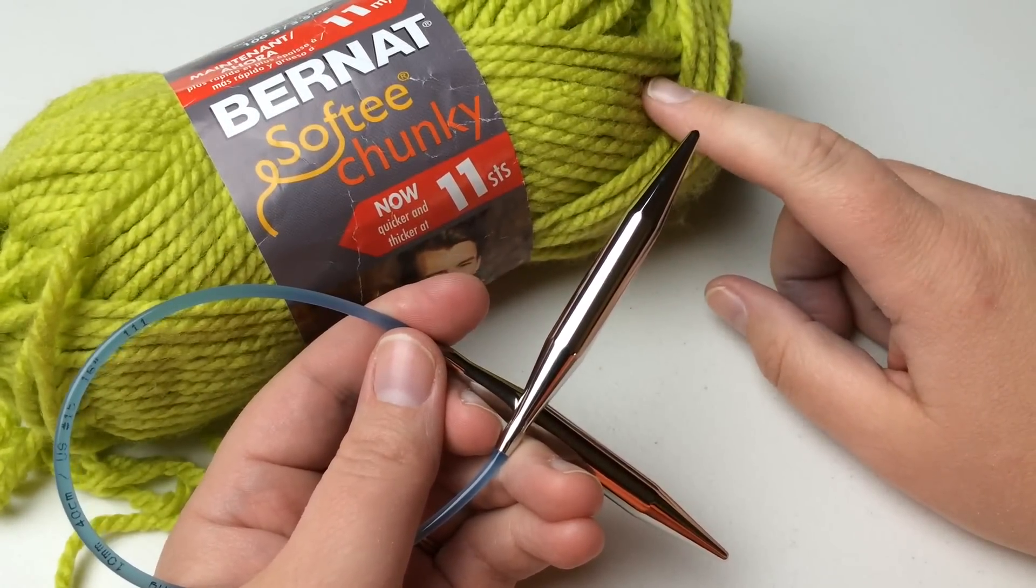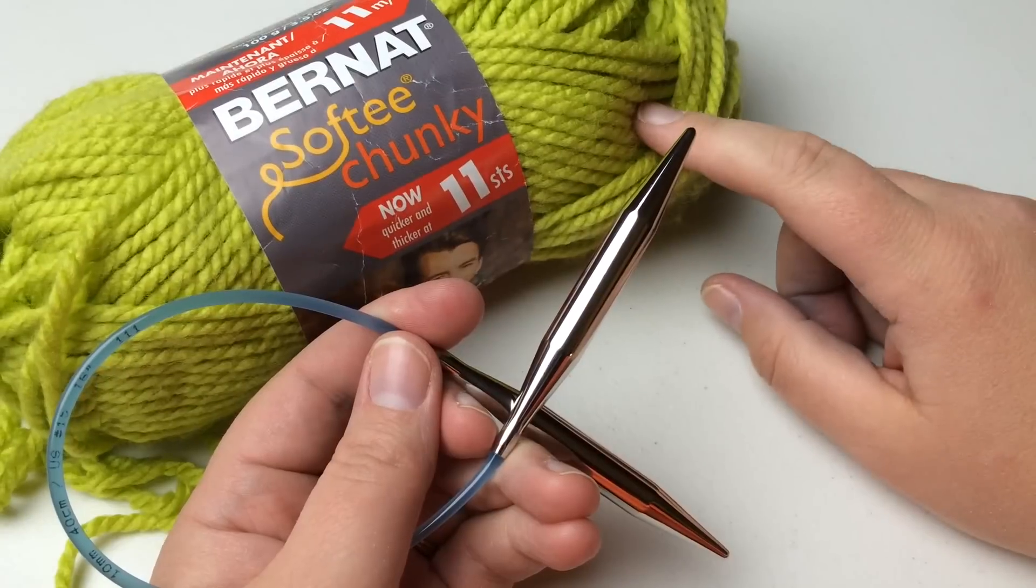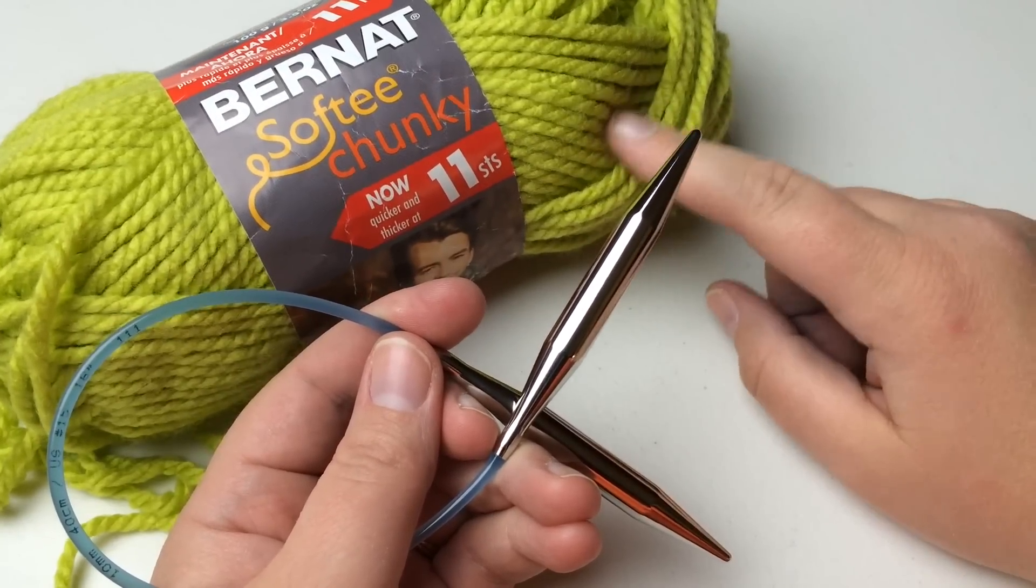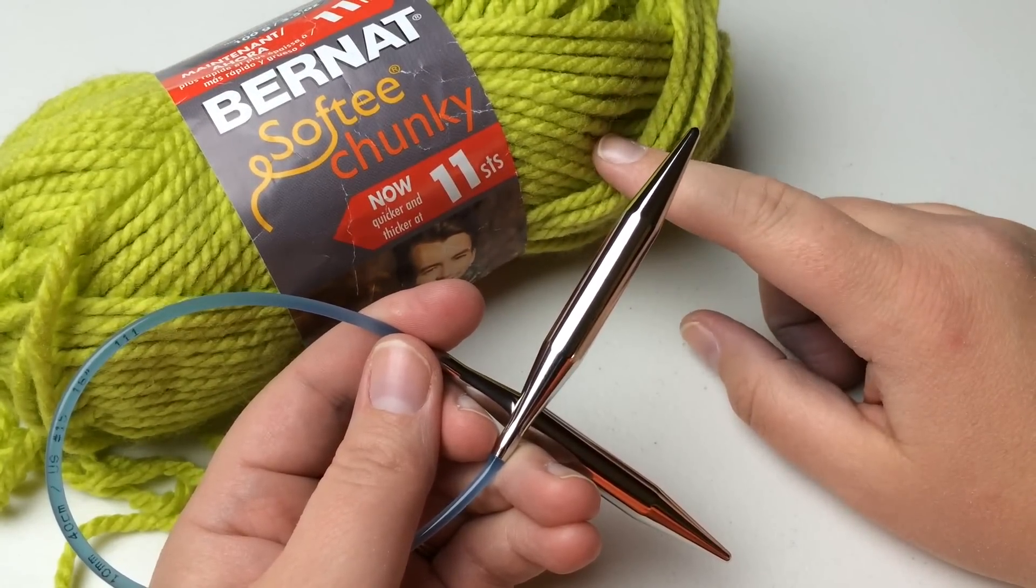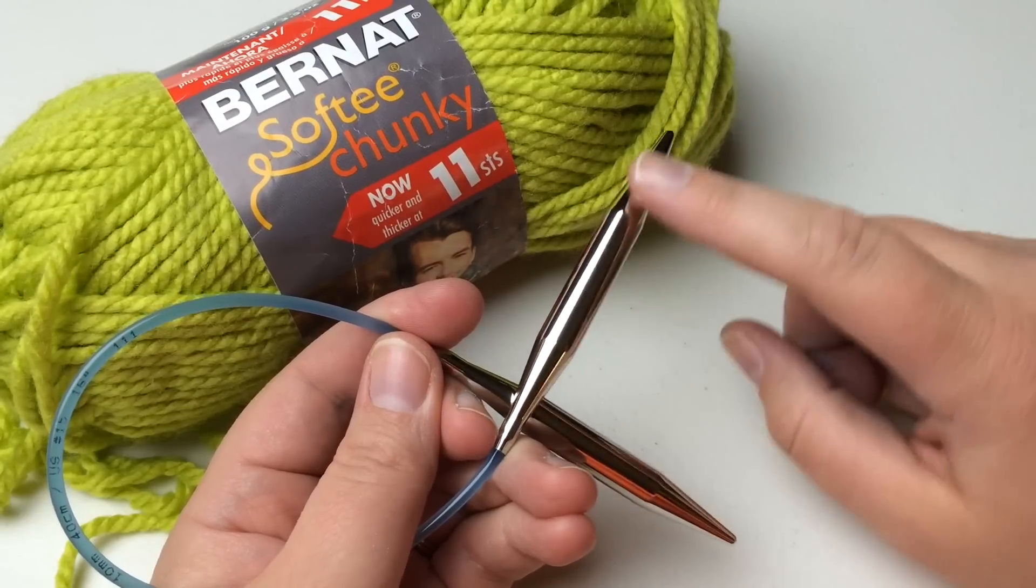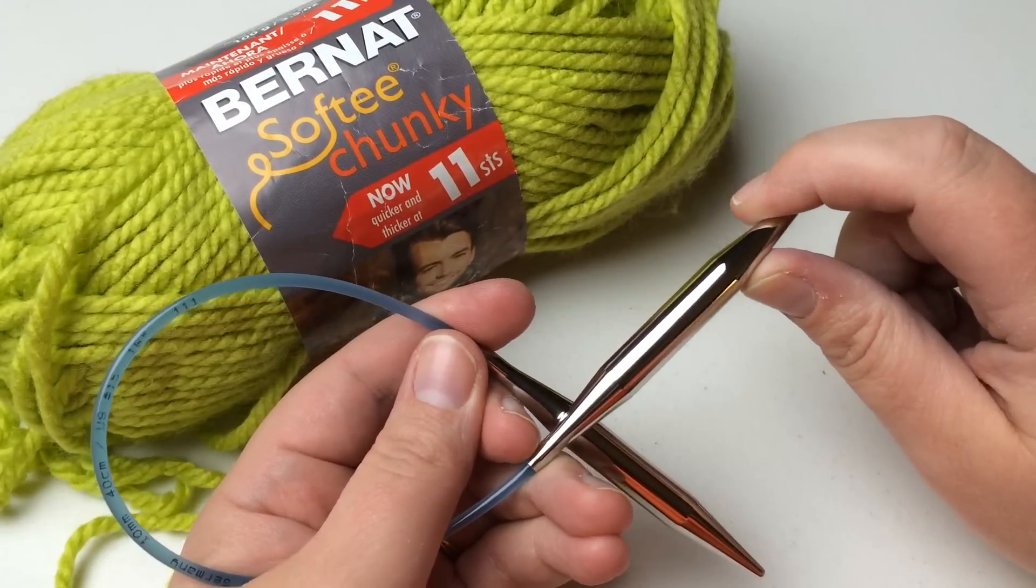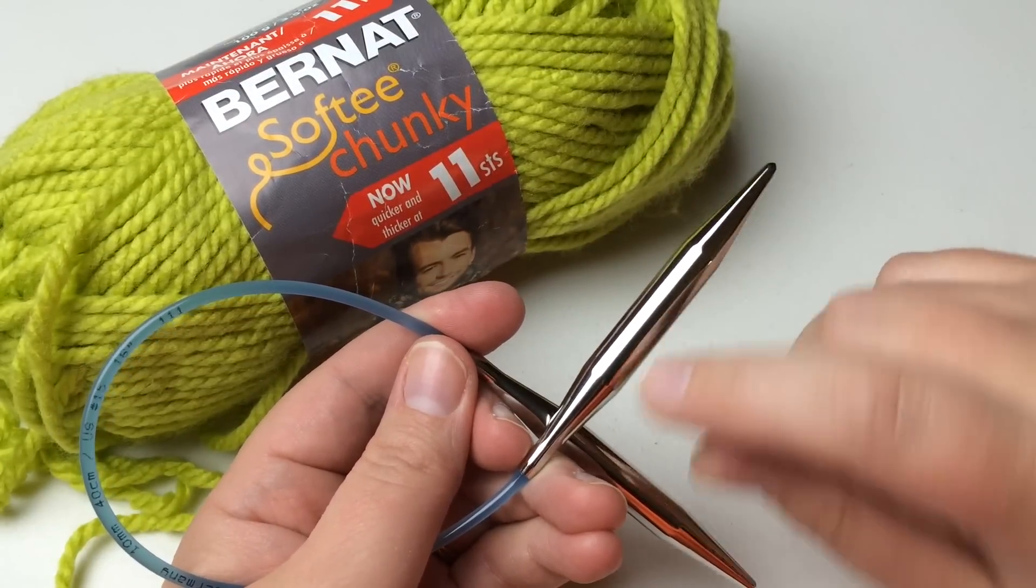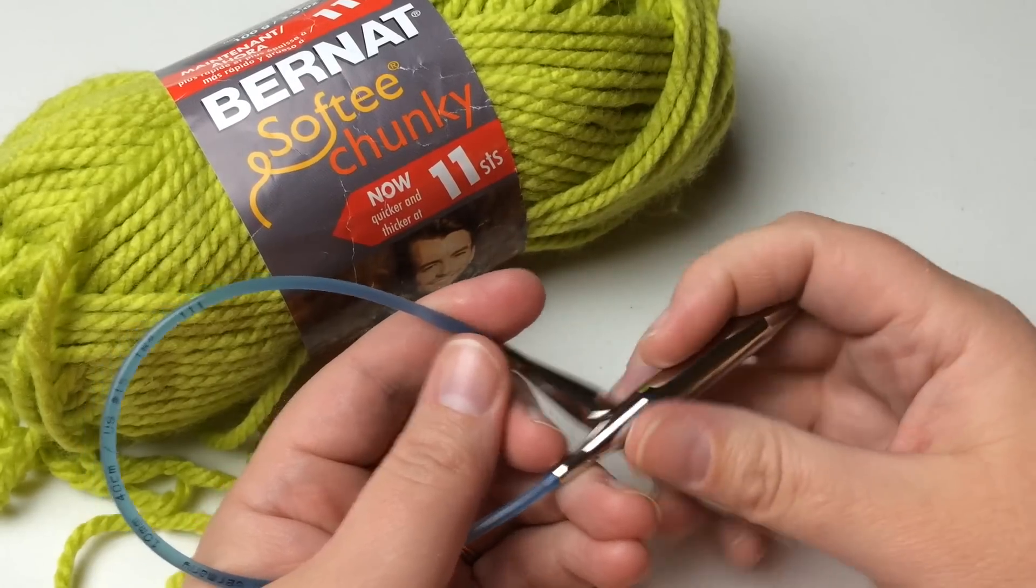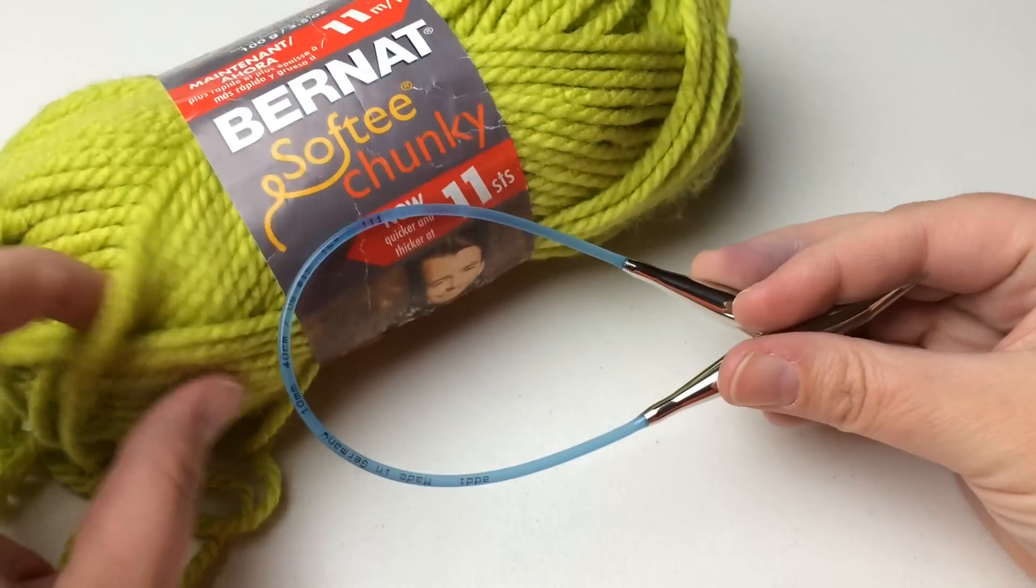Today I'm working with Bernat Softy Chunky Yarn and this is a bulky. It's made for a size 11 needle, 8mm. I'm working with a 15 which is a 10mm, just to exaggerate the stitches.